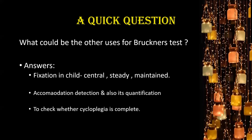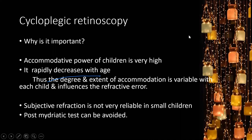Cycloplegic retinoscopy is important because the accommodative power of children is very high and rapidly decreases with age. The degree and extent of accommodation is variable with each child and influences the refractive error — an emmetropic eye can become myopic, a myopic child can become more myopic, or a hyperopic child less hyperopic when accommodating. Subjective refraction is unreliable in small children, and post-mydriatic test can be avoided if cycloplegic retinoscopy correlates with dynamic refraction.